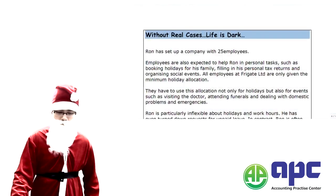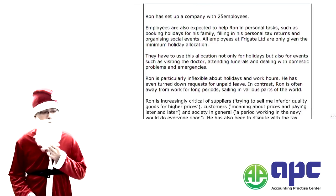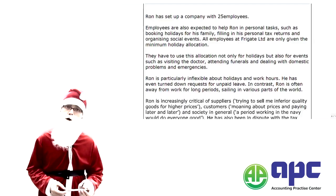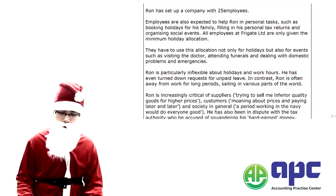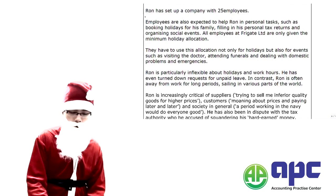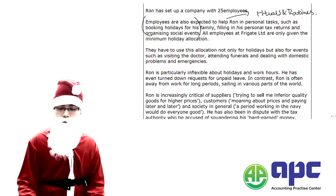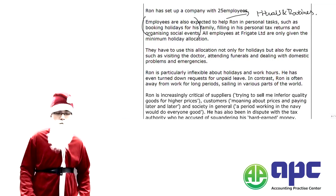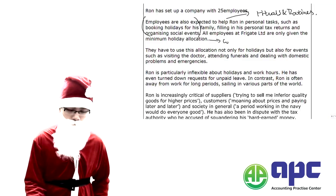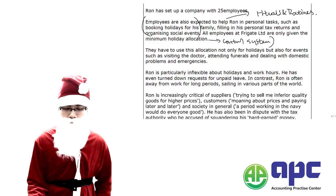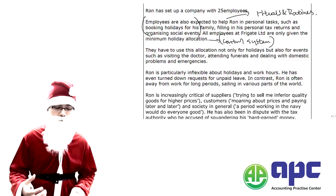Let's apply this to an actual exam-standard question — an extract from your P3 past exam paper. Ron has set up a company with 25 employees, and employees are expected to help Ron with personal tasks such as booking holidays for his family, filing personal tax returns, and organizing social events. That would be Rituals and Routines — it's the day-to-day running of the business. All employees are only given the minimum holiday allocation, which reflects the Control System, as the reward system is poor and employees will likely be demotivated.